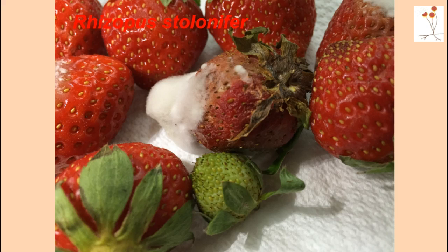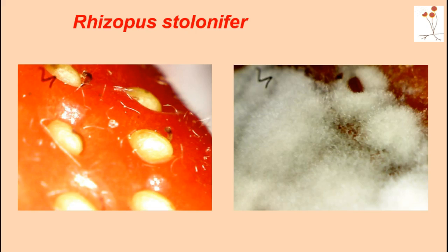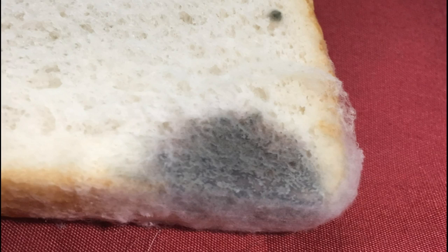I brought home some strawberries last week, and I left a few out on the counter for a few days. I noticed that some of these strawberries started to grow some white fuzzy stuff. This is the Rhizopus fungi, and what it does is it actually feeds on the surface of these strawberries. This is a before and after picture. I also did the same experiment using some bread — I left a slice of white bread on the counter, and over time it started growing dark patches as well as this white fuzzy stuff, which are the fungi I'm going to talk about.